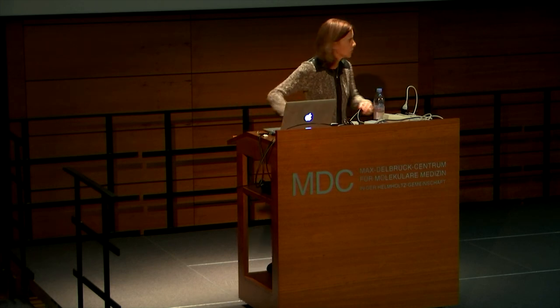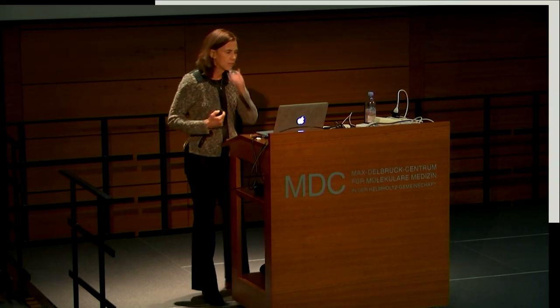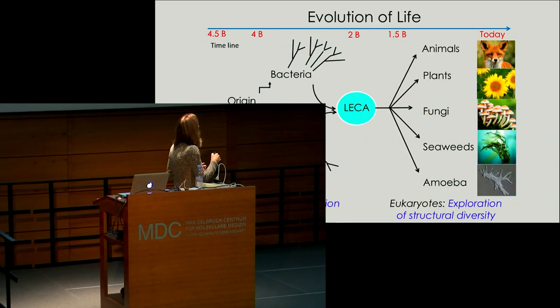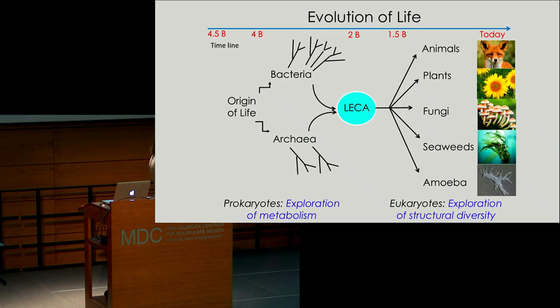What I'd like to talk to you about today is the compartmentalization of the eukaryotic cell. In particular, the organization of subcellular structures. This is a really important area because we don't appreciate how important this type of sub-compartmentalization has been to the evolution of life on Earth.